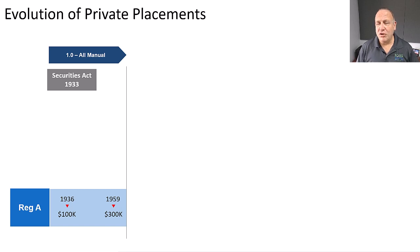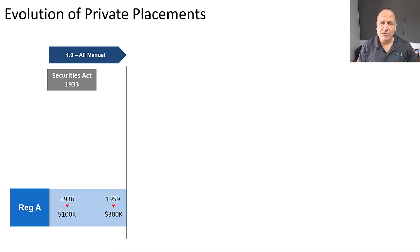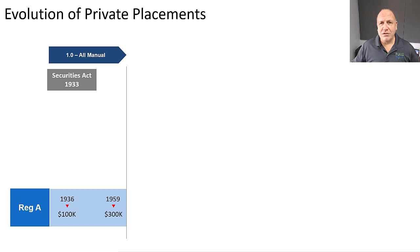It all started with the Securities Act of 1933, which federalized the securities industry. Before that, it was regulated at the state level. When the Securities Act of 1933 first came out, it largely created a regulated, federalized public market that we now know as the public exchanges and the securities industry as it exists today.